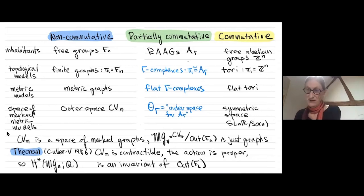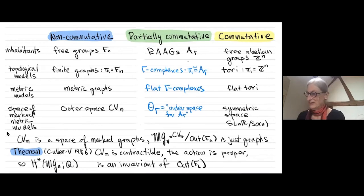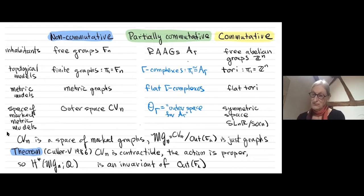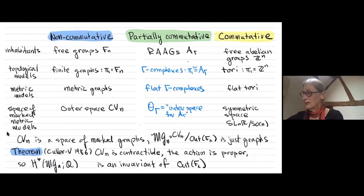Why am I telling you this at a conference on perturbative methods in quantum field theory? It turns out these spaces have variations for graphs with leaves, and graphs with leaves underlie Feynman diagrams — you can decorate them with more things to get a Feynman diagram. These spaces collect Feynman diagrams with a fixed loop order and a fixed number of external leaves in a single geometric object.